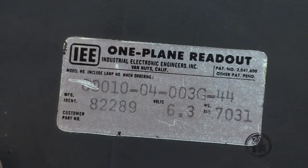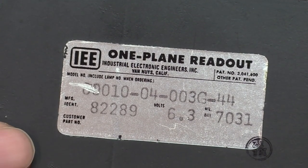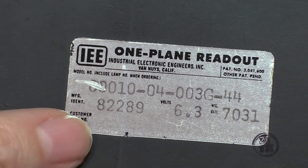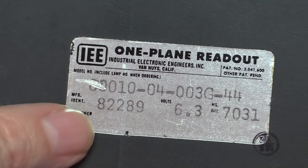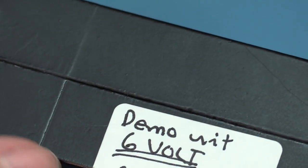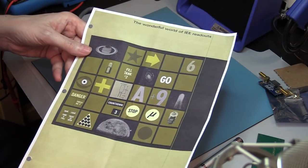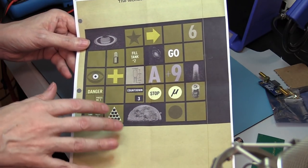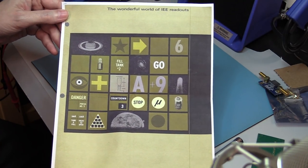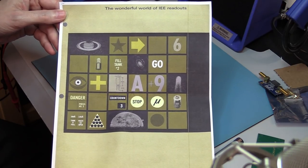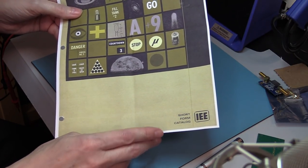So this is it. One-plane readout, Industrial Electronic Engineers, Inc., Van Nuys, California. This is a 6.3-volt model. And there's a little sticker on it, demo unit, sample images. The dealer that I bought this from, they sent me this scanned copy of the cover of the IEE catalog, The Wonderful World of IEE Readouts, and the short-form catalog.